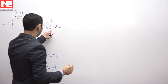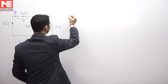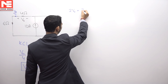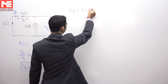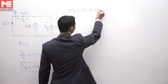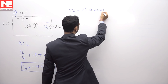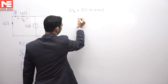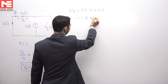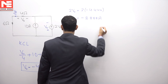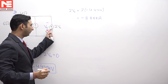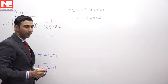The current of the dependent source 2V0 will be equal to 2 multiplied by minus 4.444, which means it is coming equal to minus 8.888 amperes. So this is the current of the current source.